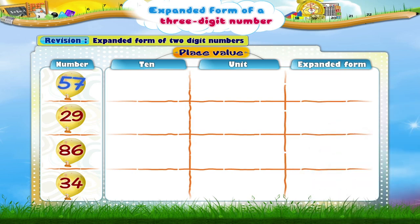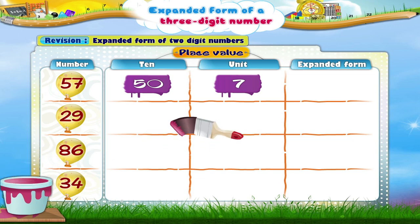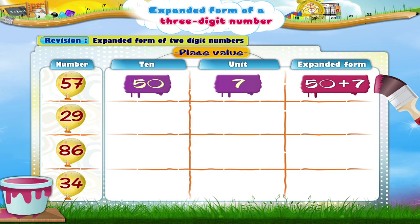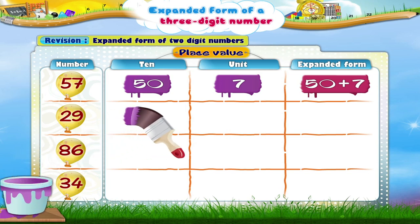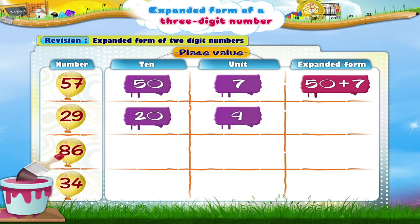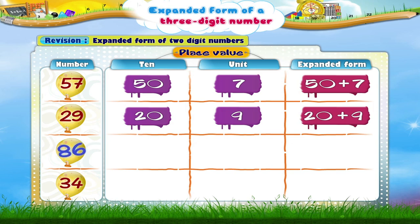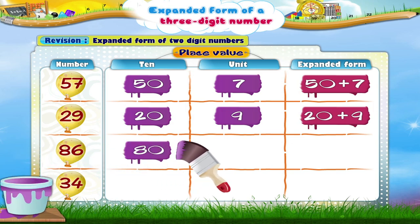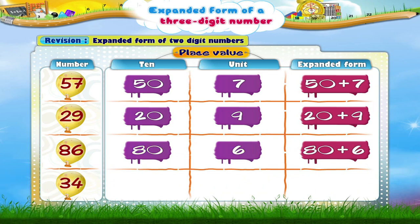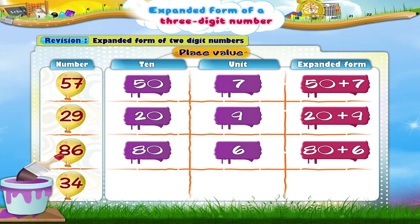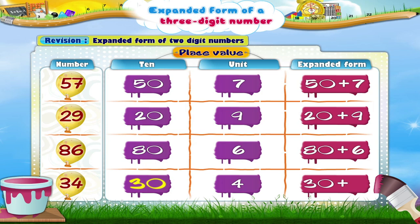The expanded form of fifty-seven is fifty plus seven. The expanded form of twenty-nine is twenty plus nine. The expanded form of eighty-six is eighty plus six. The expanded form of thirty-four is thirty plus four.